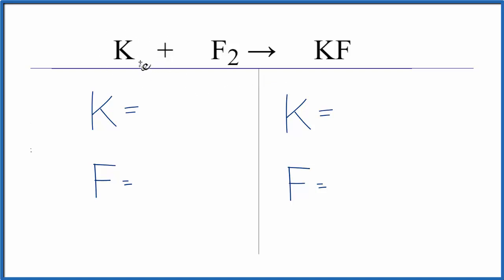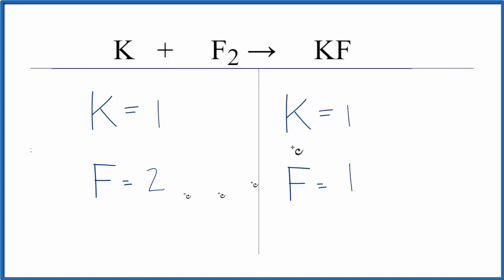For potassium, it's not written, but there's a one right here. So we have one potassium atom and two fluorines, then one potassium on the product side and one fluorine on the product side. So it's not balanced — these numbers aren't equal, particularly the fluorine atoms.